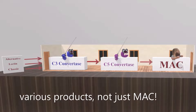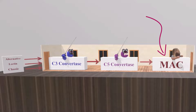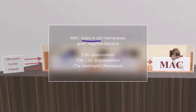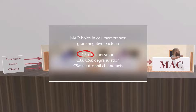How does the complement system do this? It does it through the production of various products — not just MAC. That was my initial problem in understanding the complement system: I thought the whole purpose was to produce MAC. But MAC is only one of several things we want to produce. MAC is important for creating holes in cell membranes and is very important in fighting against gram-negative bacteria.